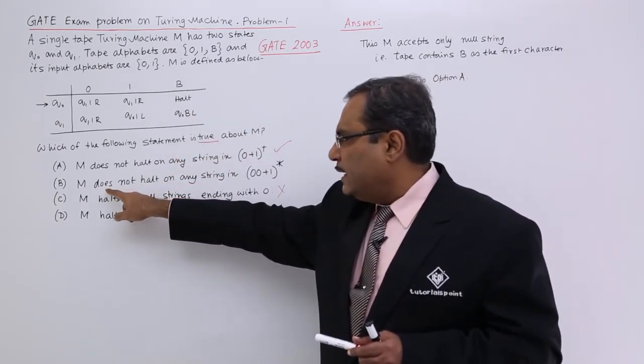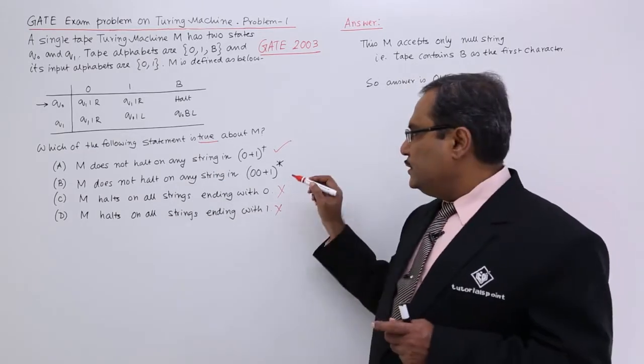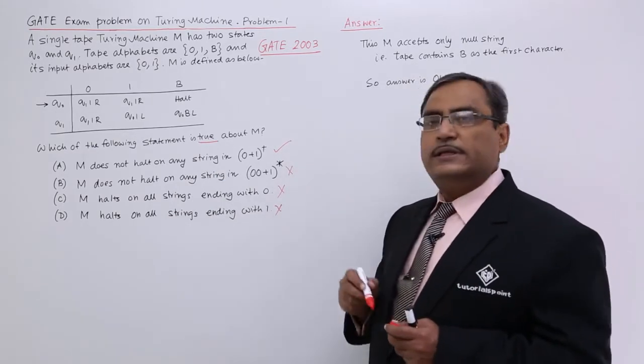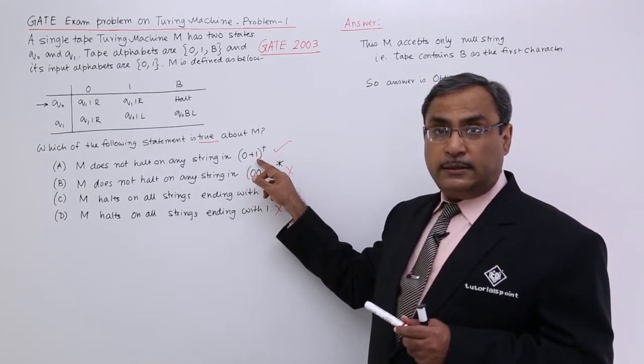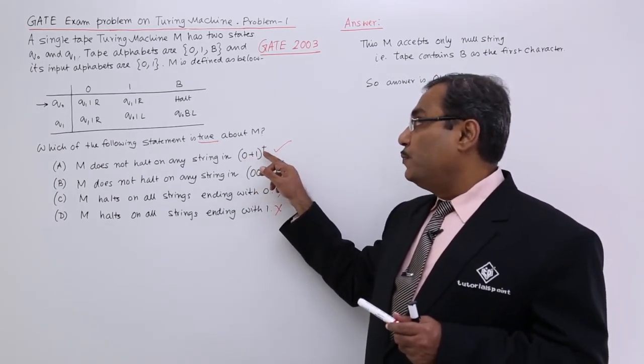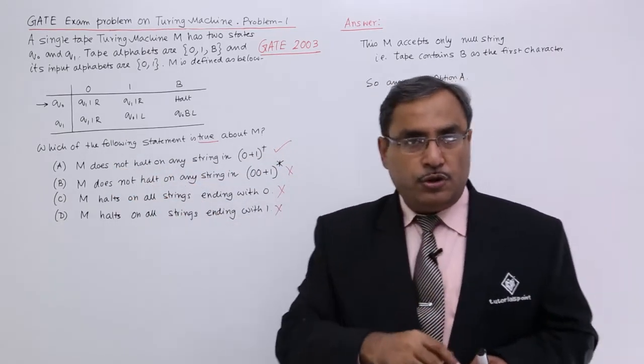It is demanding that it does not hold is false, is wrong. So it is not correct. Only this one is correct because it cannot produce any blank character because it is 0 plus 1 whole plus. Does not hold is true.